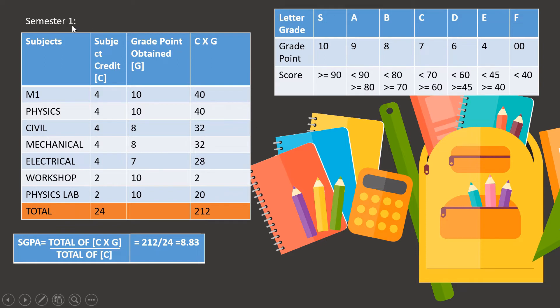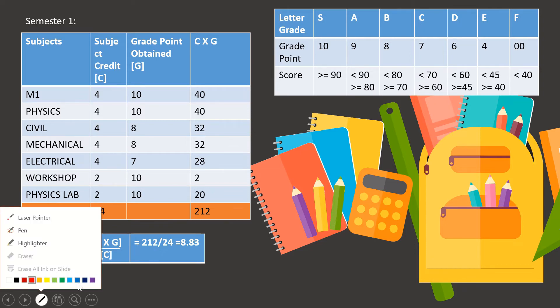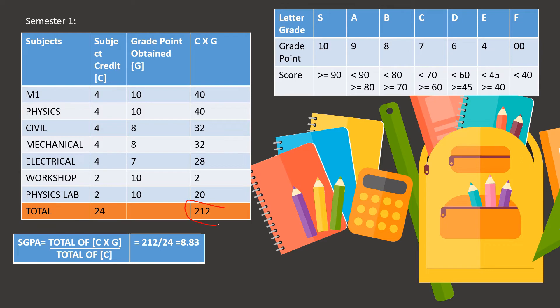Now check the SGPA for semester one. You will have to divide this C into G total divided by the C total. That is 212 divided by 24, which equals 8.83. This is for semester one.